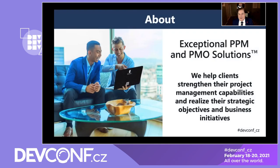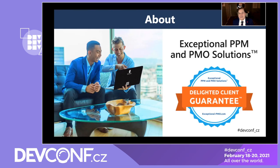Here's the about information about my company, Exceptional PPM and PMO Solutions. Those acronyms: PPM stands for Project Portfolio Management, and PMO stands for Project Management Office. This is really an umbrella and shorthand for project, program, portfolio, and PMO management, which includes agile, traditional — also known as waterfall — and hybrid approaches. What we do exactly is help our client organizations fortify and advance their project management capabilities so that they can best realize their strategic objectives. The goals are typically quicker cycle time, faster time to market, higher satisfaction, on budget, on time, and more. So confident are we that we have a delighted client guarantee.